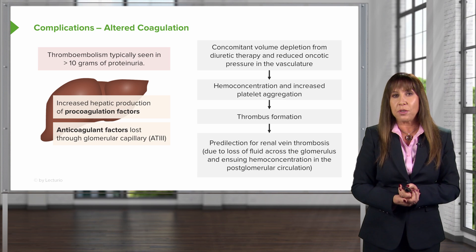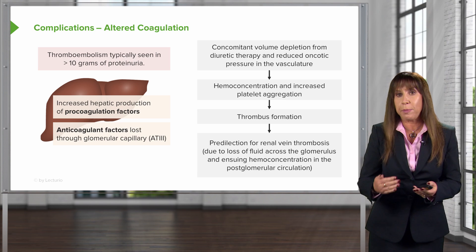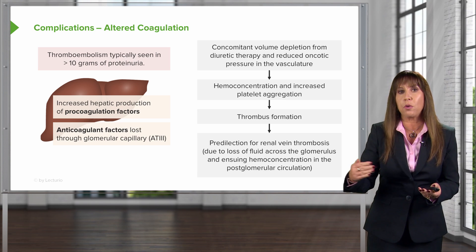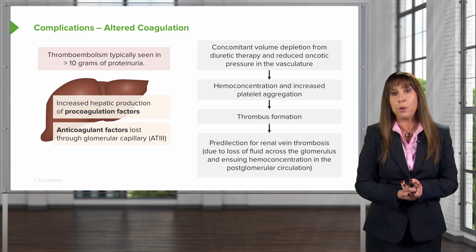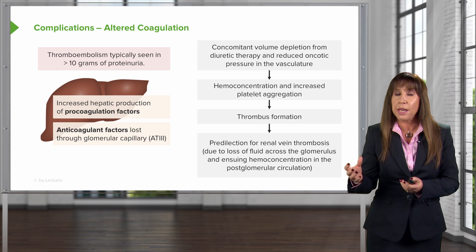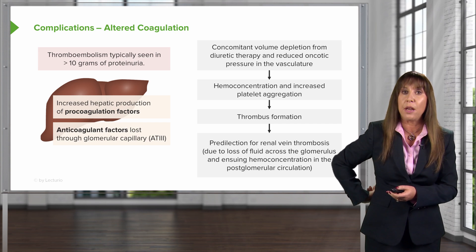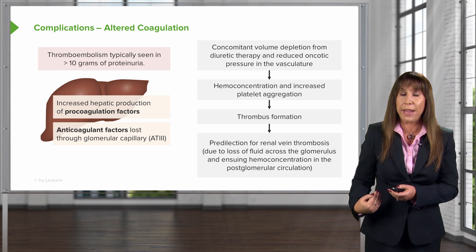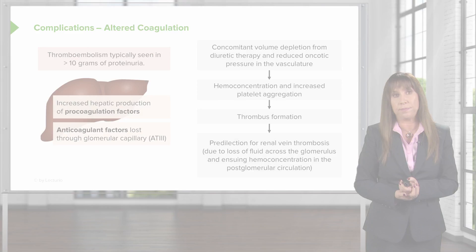Sometimes there's a predilection for renal vein thrombosis, probably because of loss of fluid across the glomerulus and the ensuing hemoconcentration in the postglomerular circulation. It's not uncommon to have a scenario where a patient presents with back pain, renal vein thrombosis, and then something like membranous nephropathy.